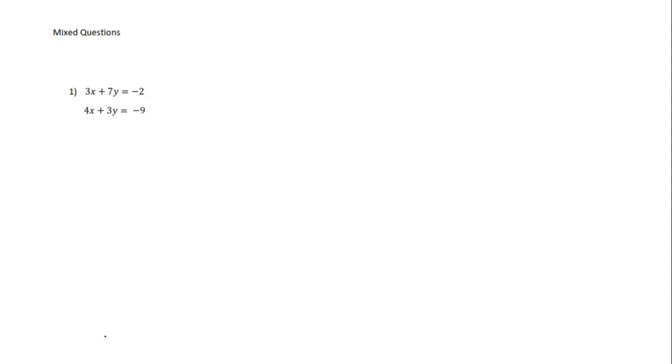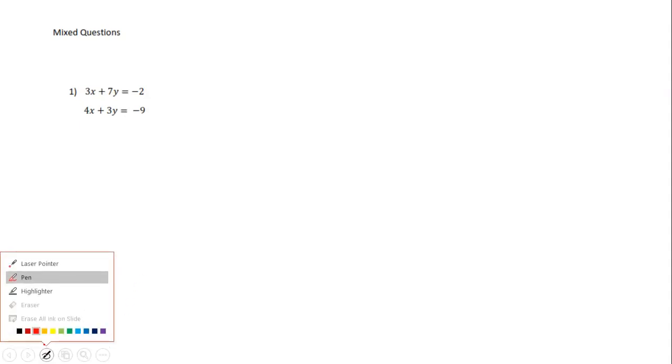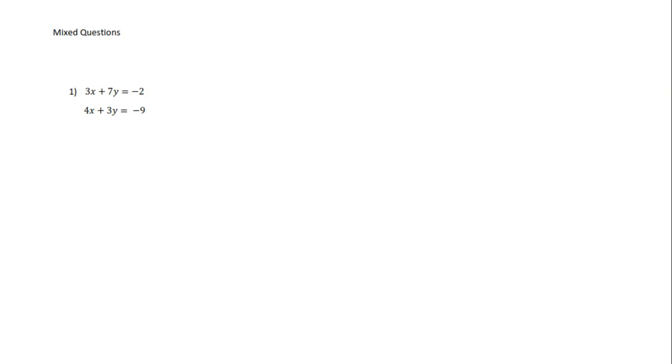Hi guys. During this video we are going to go through the solutions to the classwork to use with your feedback. So we've got mixed questions and the first one up was: solve 3x plus 7y equals negative 2, and 4x plus 3y equals negative 9.